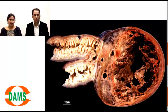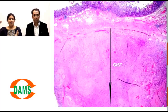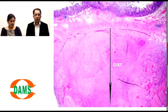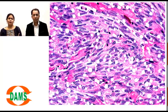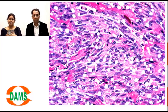On histopathology at low power, you can appreciate the mucosa on top and below it the lesion occupying the wall, confirming it does not arise from the mucosa. On microscopy, GIST can show different histologies — mixed, spindle cell, or epithelioid — but spindle cell morphology is most common. You can see long blue nuclei with tapering pink processes, arranged in intersecting bundles and fascicles.